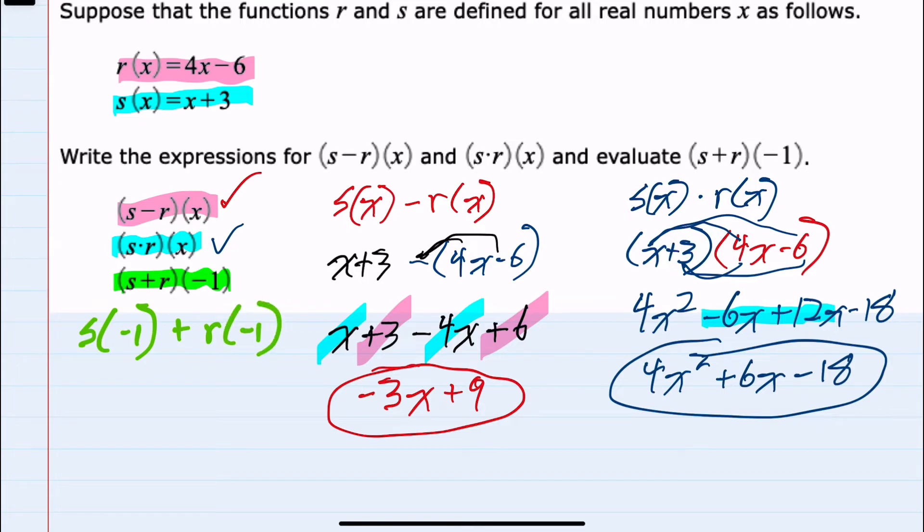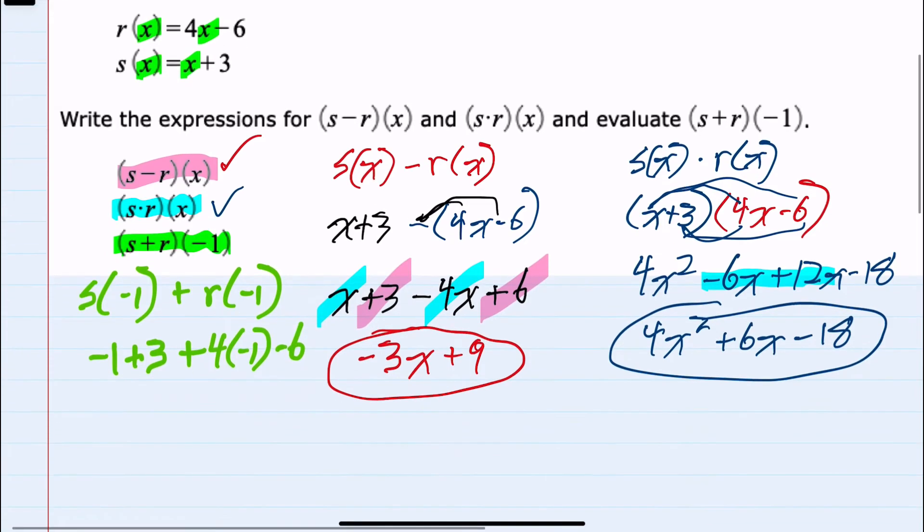So starting with our s function, replacing x with negative 1, that would give us a minus 1 plus 3. And then adding to that r of negative 1 would mean replacing x again with negative 1. So that would be 4 times negative 1 minus 6.